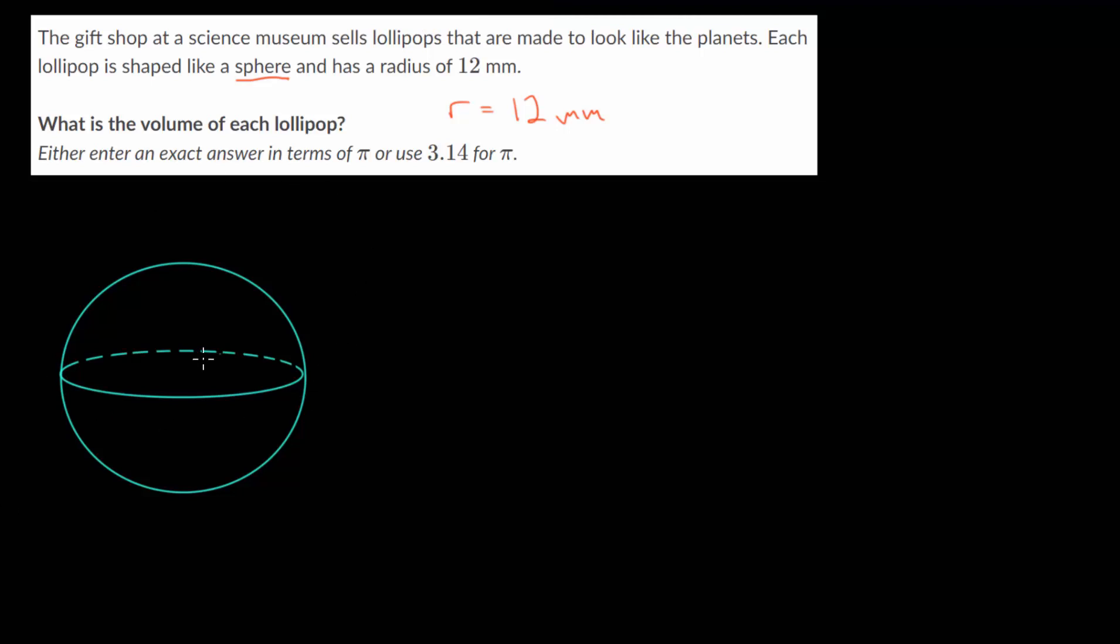And remember that a sphere is defined as the set of all points that are the same distance from some central point. Or we can say it's the set of all points in three-dimensional space that are the same distance from this center point here. And we call this distance from the center to the actual sphere, the radius of the sphere.